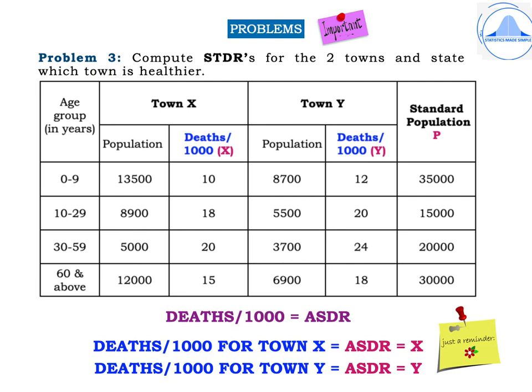Problem 3: Compute STDRs for two towns and state which town is healthier. Age groups are 0–9, 10–29, 30–59, and 60 and above. Town X has population values 13,500; 8,900; 5,000; and 12,000, and deaths per thousand of 10, 18, 20, and 15. Town Y has population values 8,700; 5,500; 3,700; and 6,900, and deaths per thousand of 12, 20, 24, and 18. The standard population values are given separately as 35,000; 15,000; 20,000; and 30,000. Since the words 'deaths per thousand' are used, it means ASDRs are already given.